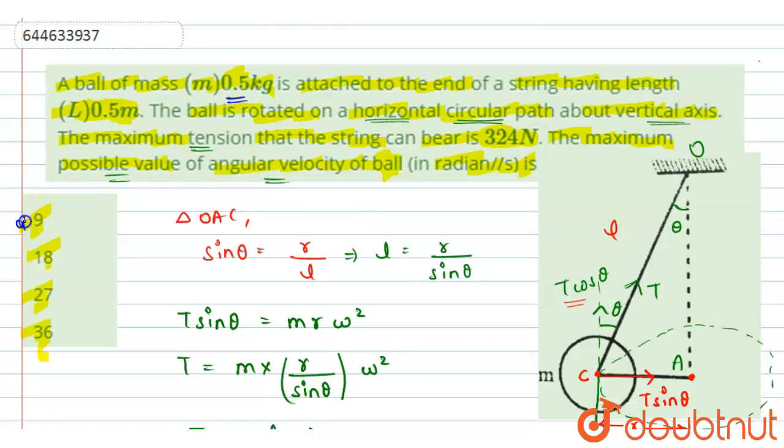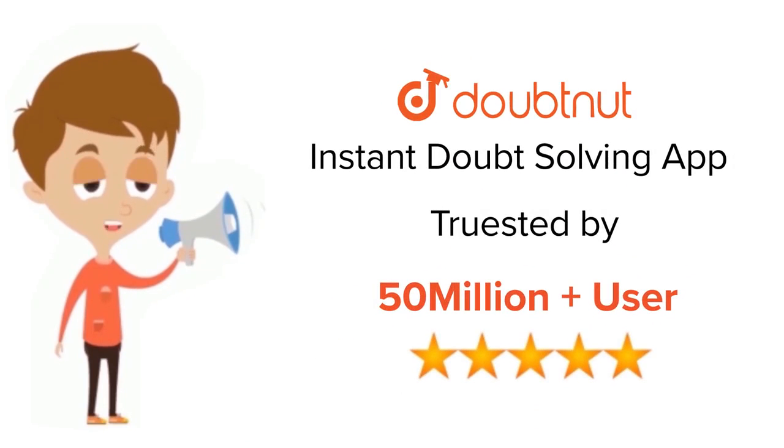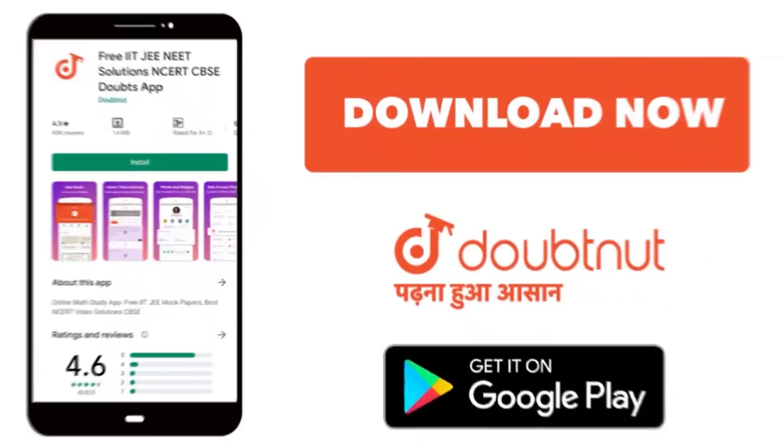So from the given options A, B, C and D, option D is the correct answer. Thank you. For class 6 to 12, IIT and NEET level, trusted by more than 5 crore students, download Doubtnut today.